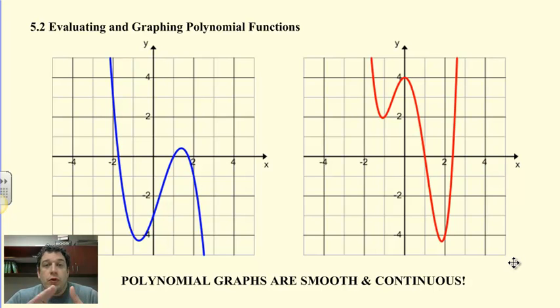All polynomial graphs are both smooth and continuous. Smooth means there's no sharp angles or turns in the graph. Continuous means it's one single line. You don't pick up your pen at any point, like in a piecewise function, and so you're just really drawing a smooth and continuous graph, very curvy.